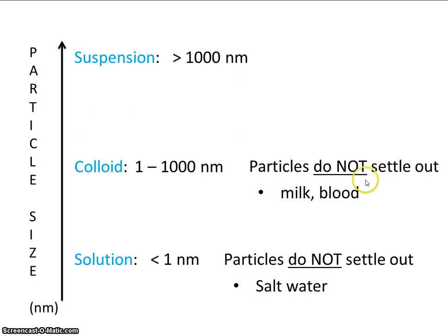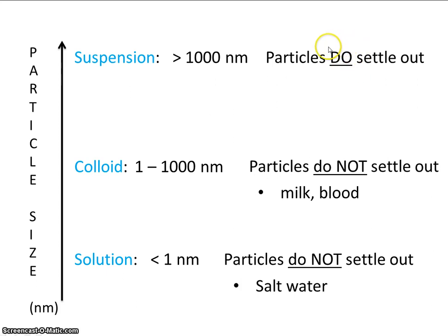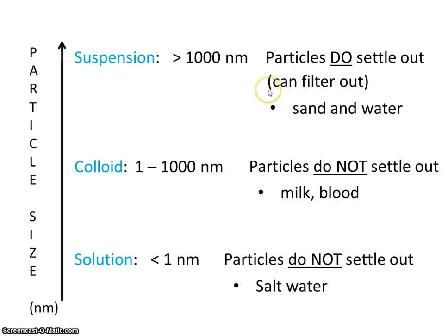Some examples of colloids are milk and blood. In a suspension, the particles are so big that they do settle out. In fact, if we had a funnel and some filter paper, we could probably catch the suspended particles on the filter paper. An example would be sand and water mixed together — eventually the sand would fall to the bottom of the beaker.